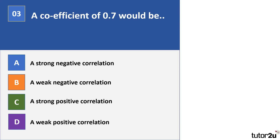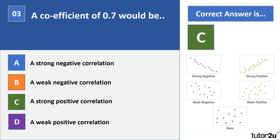Question 3. A coefficient of 0.7 would be A, a strong negative correlation, B, a weak negative correlation, C, a strong positive correlation, or D, a weak positive correlation. Your correct answer there is C, a strong positive correlation. The value of 0.7 is referred to as a coefficient. You are required to know what coefficients are — for example, you might get a question with an image of a scattergram and be required to comment on what the coefficient could be.